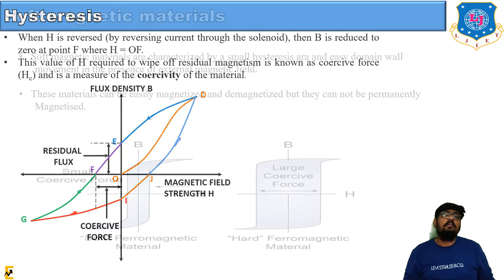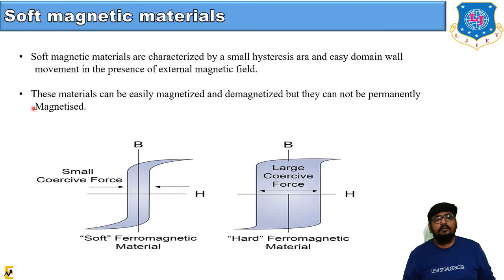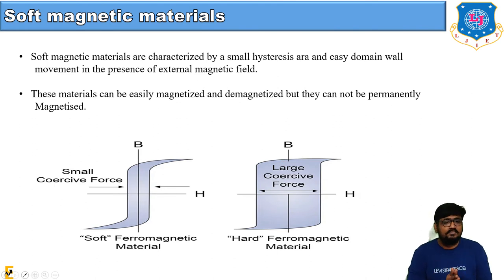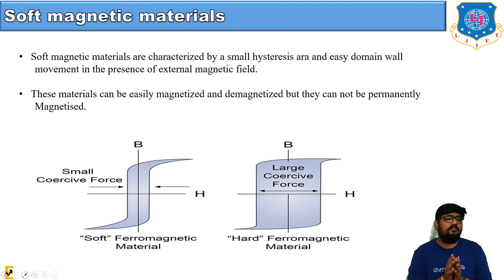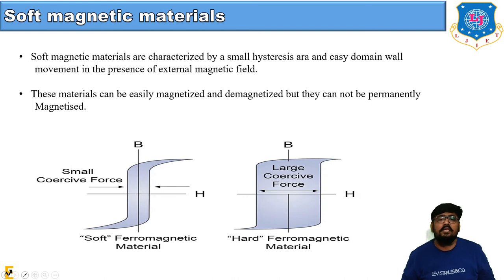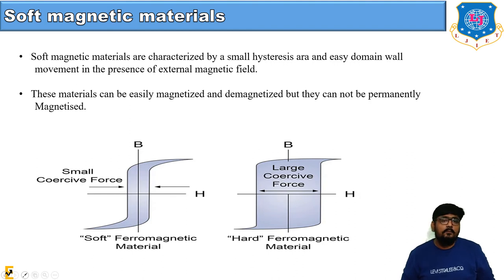Depending on the type of hysteresis loop, materials are classified as soft magnetic material and hard magnetic material. Materials with very low coercive force are known as soft magnetic materials, while materials with very high coercive force are known as hard ferromagnetic materials. Soft magnetic materials cannot be made permanently magnetized, whereas hard magnetic materials can be made into permanent magnets.